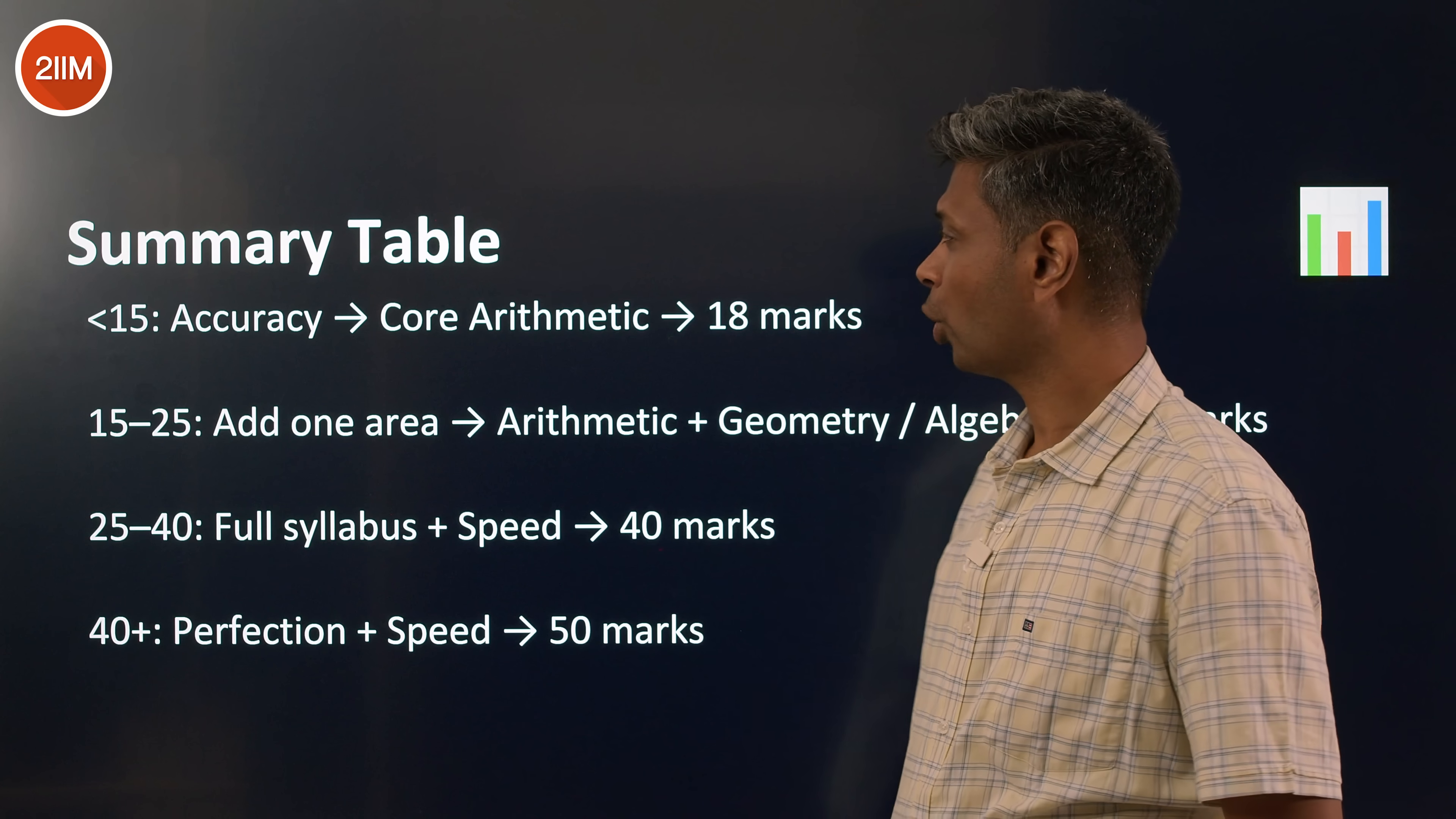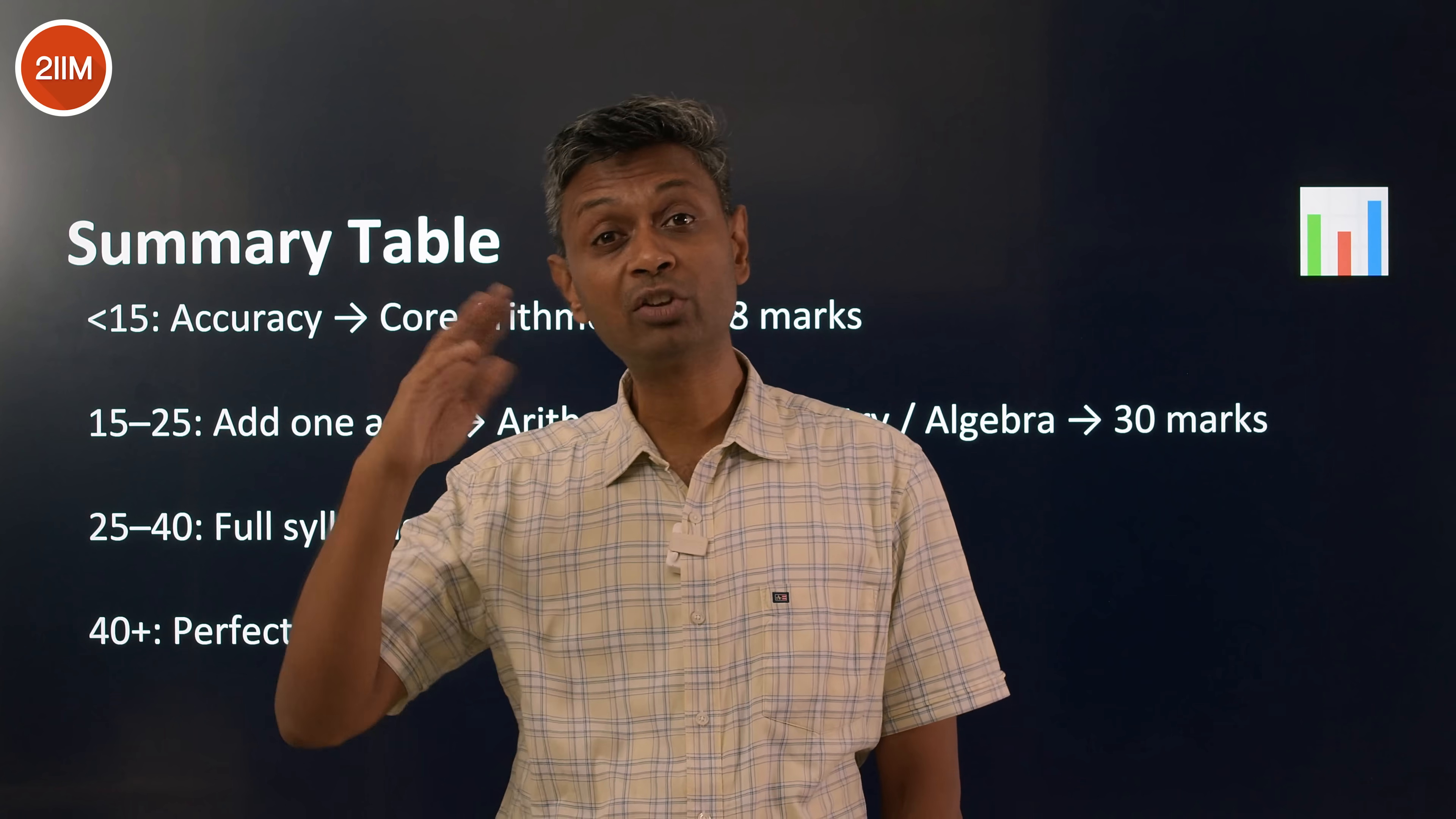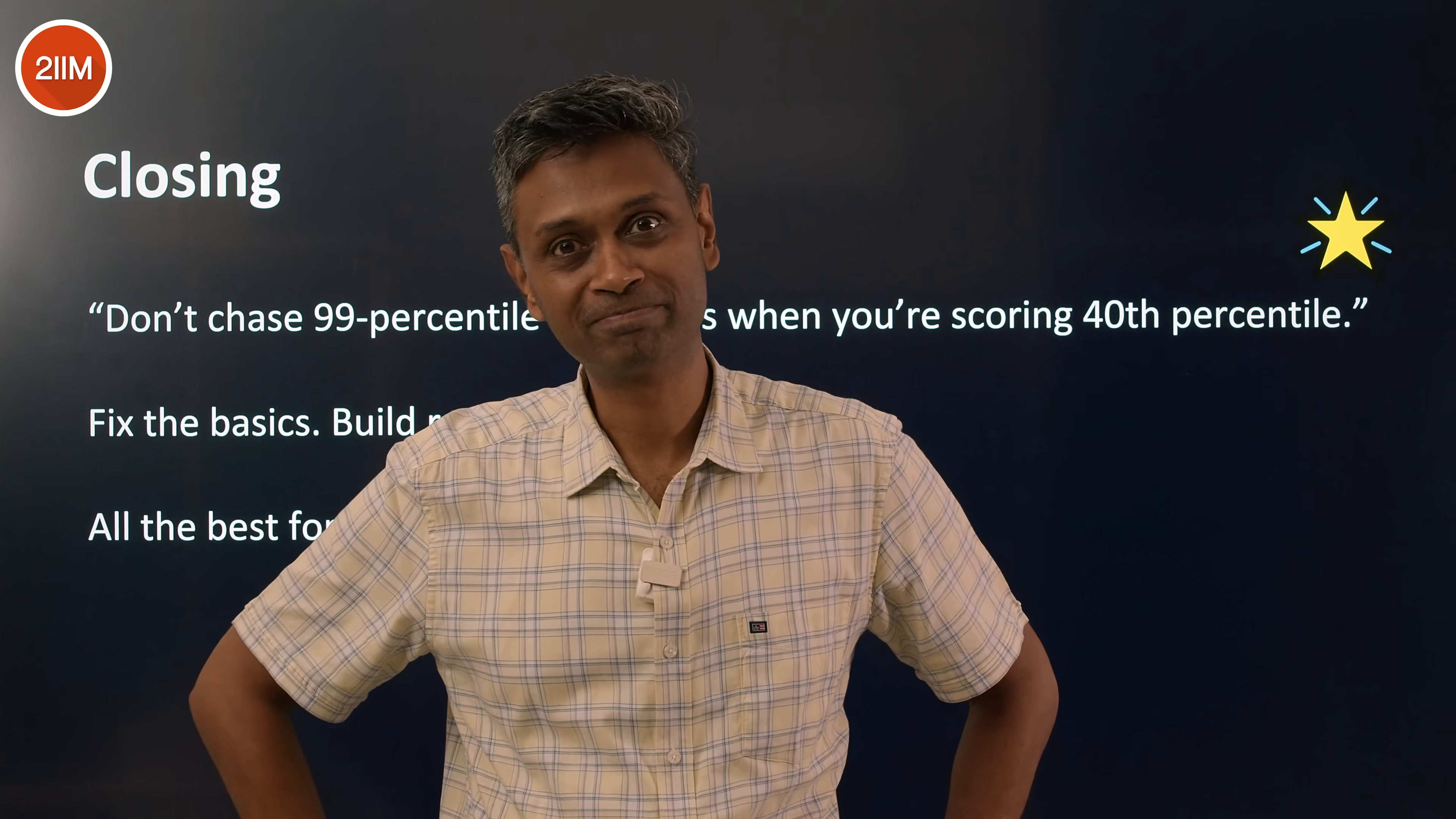Summary: less than 15, narrow down your topics, accuracy is the game. 15 to 25, if you're here stepping up, add one more thing, either algebra or geometry. 25 to 40, expand the scope, focus on speed. 40 plus, everything matters. There's nothing that doesn't matter. Speed, intensity, focus, topic, range, ultra comfort with having bunch of things on autopilot. Don't chase 99 percentiles when you're scoring 40th percentile. Fix the basics, build range, then it's time to fly.